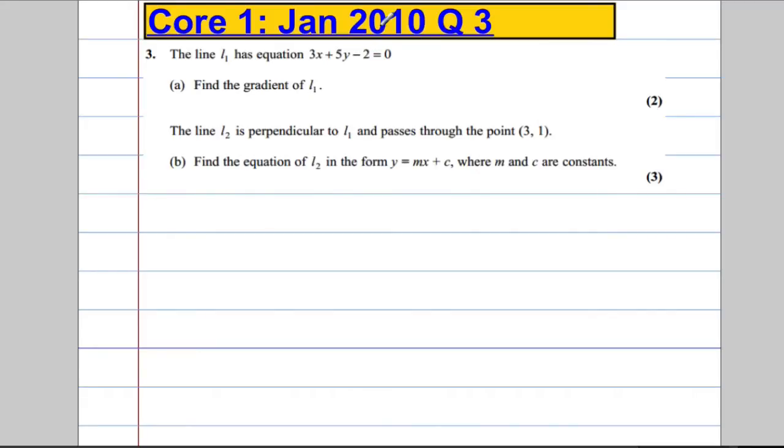All right, so question 3: the line L1 has equation 3x plus 5y minus 2 equals 0. Find the gradient of L1.